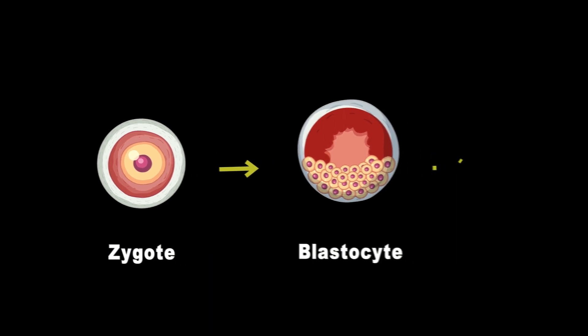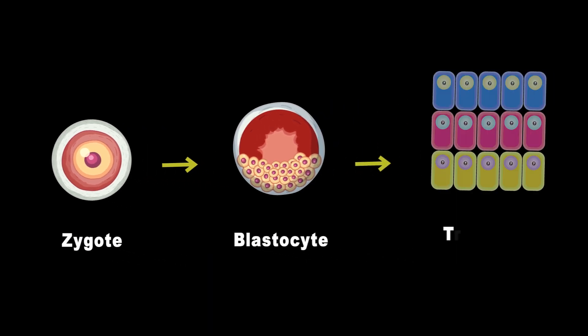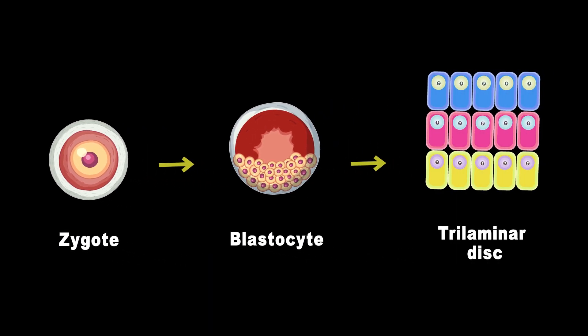After gastrulation, which was discussed in the previous video, the embryo goes through changes and forms a three-layered disc. This disc consists of the ectodermal, mesodermal, and endodermal germ layers.